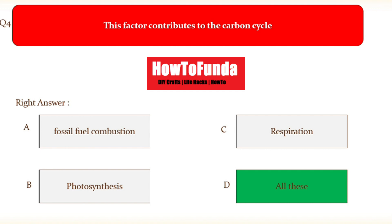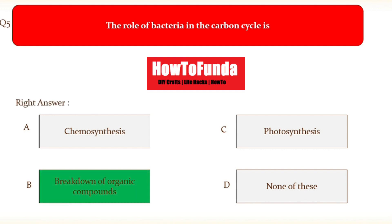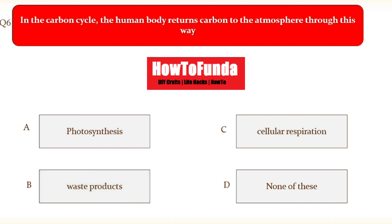Question number five: what is the role of bacteria in the carbon cycle? Option A chemosynthesis, option B breakdown of organic compounds, option C photosynthesis, option D none of these. The correct answer is breakdown of organic compounds.